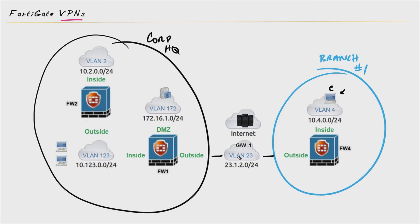The Internet is a dangerous place — we don't want to send important data back and forth unprotected or unencrypted. And here's how a VPN, a virtual private network, can solve that. We can train Firewall 1 and Firewall 4 to be buddies and create this logical tunnel between them.